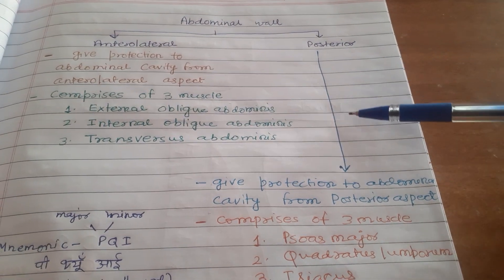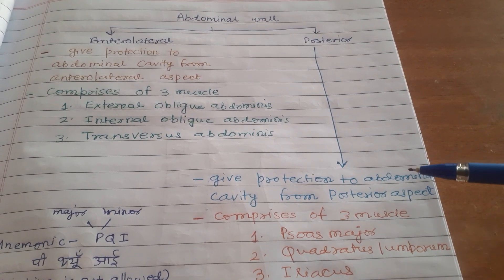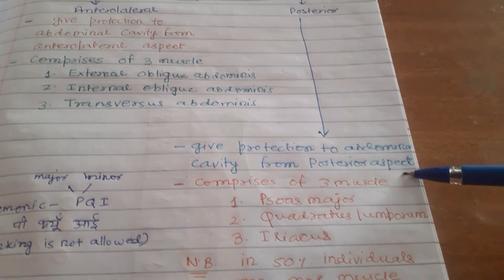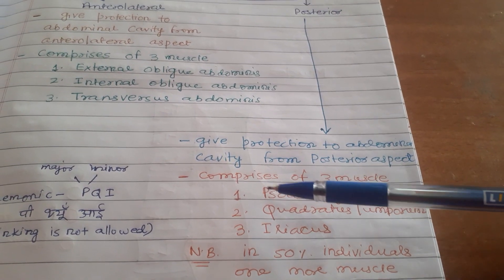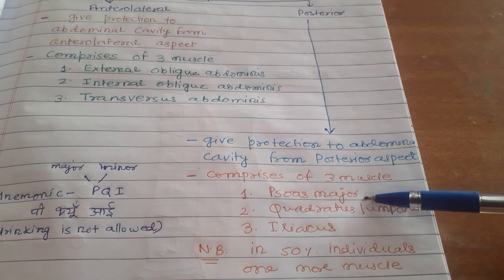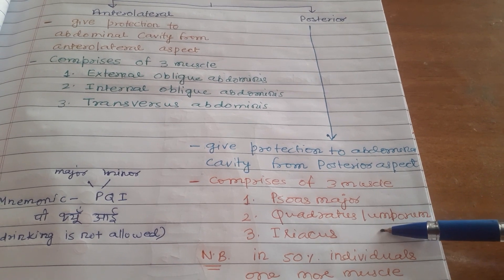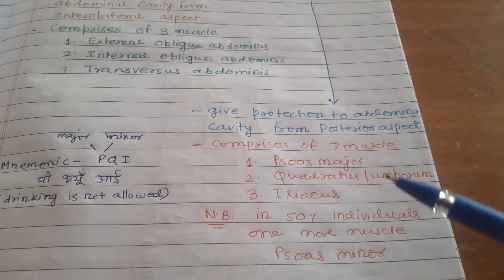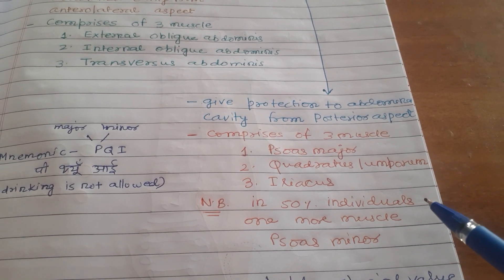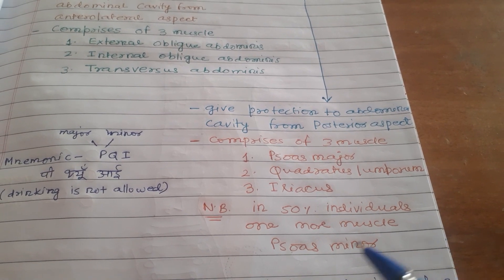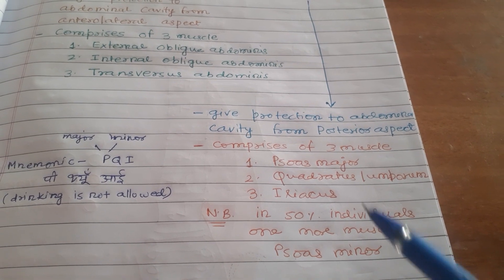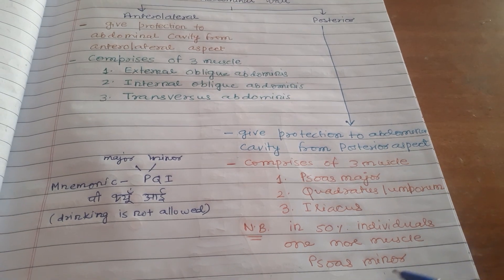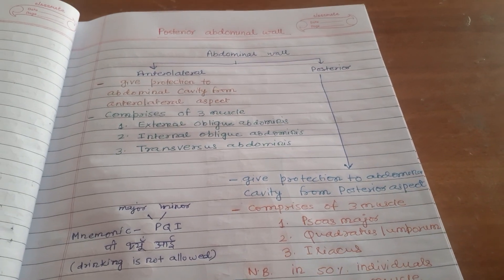The posterior wall gives protection to the abdominal cavity from the posterior aspect and comprises three muscles: psoas major, quadratus lumborum, and iliacus. In 50% of individuals there is one more muscle, psoas minor. Just to memorize the posterior abdominal wall muscles, use the mnemonic PQI.